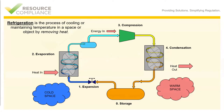You'll notice in this diagram that there are four primary stages: expansion, evaporation, compression, and condensation. You'll also notice storage, which is labeled zero because it's not actually part of the theoretical refrigeration cycle and is not strictly needed for a refrigeration system to work.